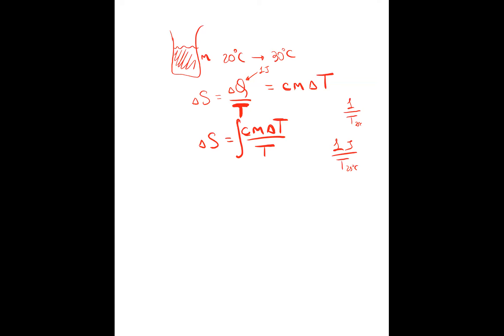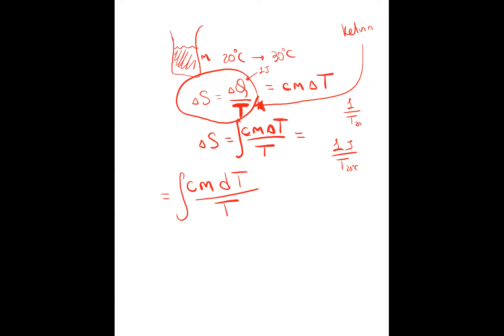One thing I didn't mention is that this entropy equation is one where you have to use the Kelvin scale — otherwise it doesn't work. So let's take this integral. The integral is heat capacity times mass times dT divided by T, from 20 to 30 degrees. Converting to Kelvin, I get 293 and 303. This is a simple integral of dT over T. The heat capacity and mass don't depend on temperature, so this is C·m times the log of T.